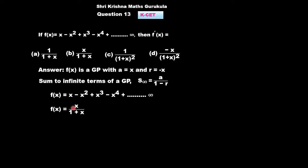So, f(x) becomes x/(1+x), with x being the first term and -x being the common ratio. That is 1 minus of minus x, which gives 1+x.